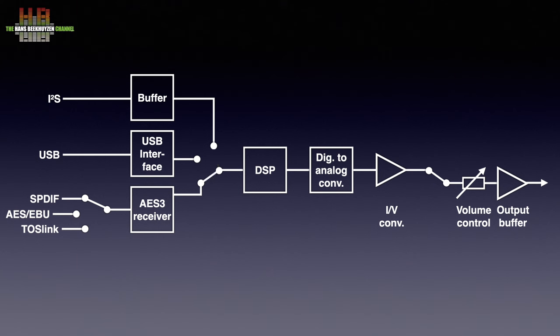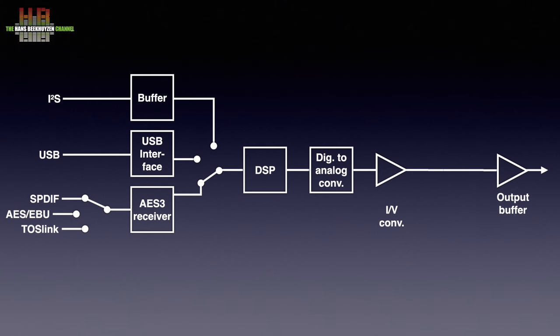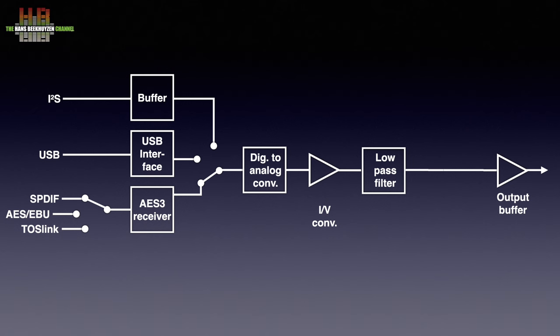Not all DACs have an analog volume control. Even the output buffer function might have been integrated in the current-to-voltage converter. In that case the digital signal processor might do the volume control. Often Chinese R-2R ladder converter-based DACs are non-oversampling, in which case a digital signal processor is not needed. But then an analog low-pass filter is needed — the so-called reconstruction filter that is there to prevent aliasing. This type of DAC seldom has a volume control and thus can't be used as a digital preamp.